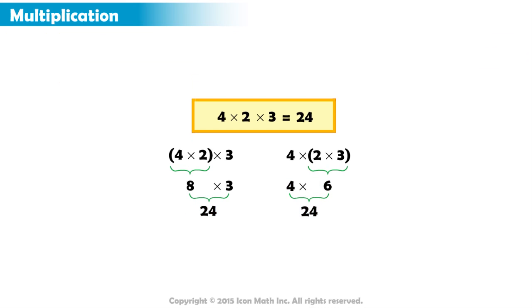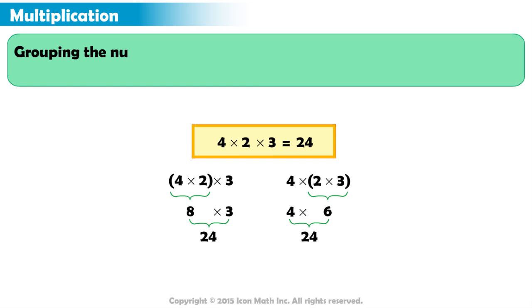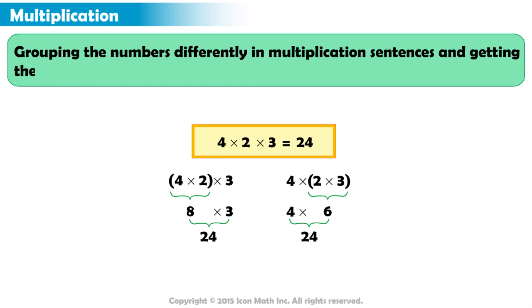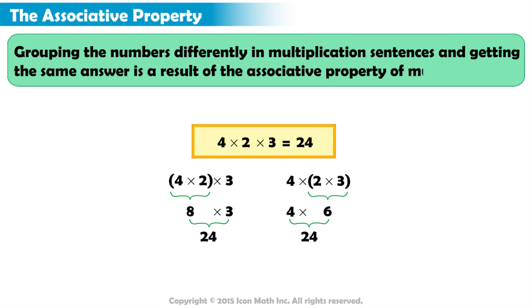As you can see, it did not matter which two numbers we multiplied first. We can group any two numbers together and still get the same final product. Grouping the numbers differently in multiplication sentences and getting the same answer is a result of the associative property of multiplication.